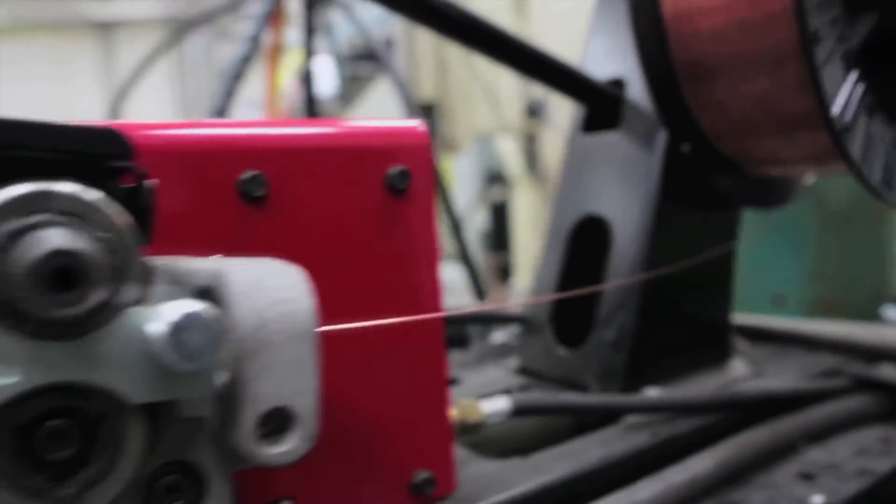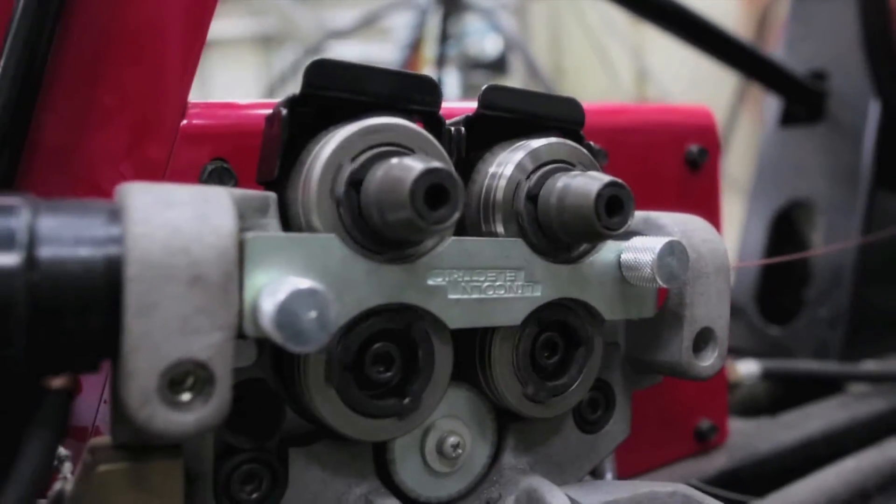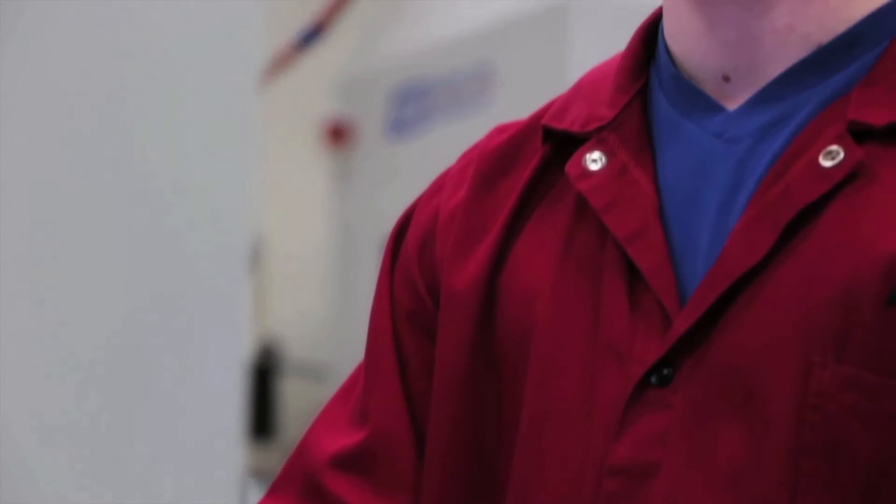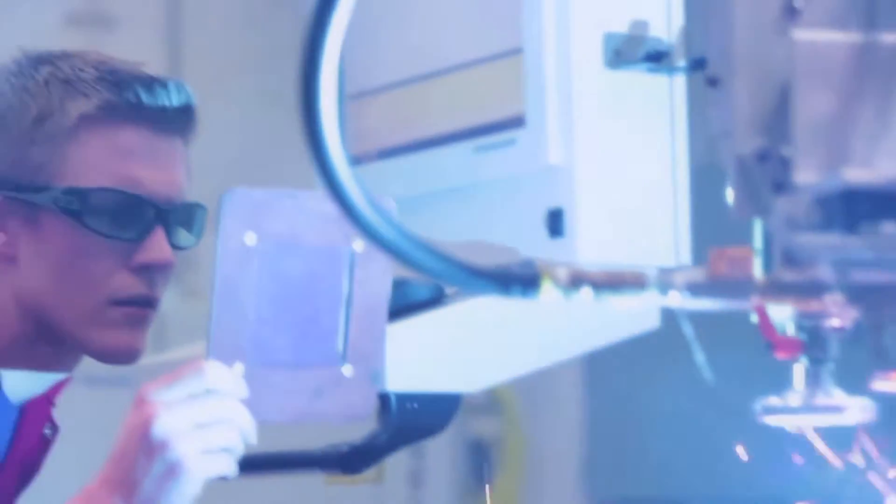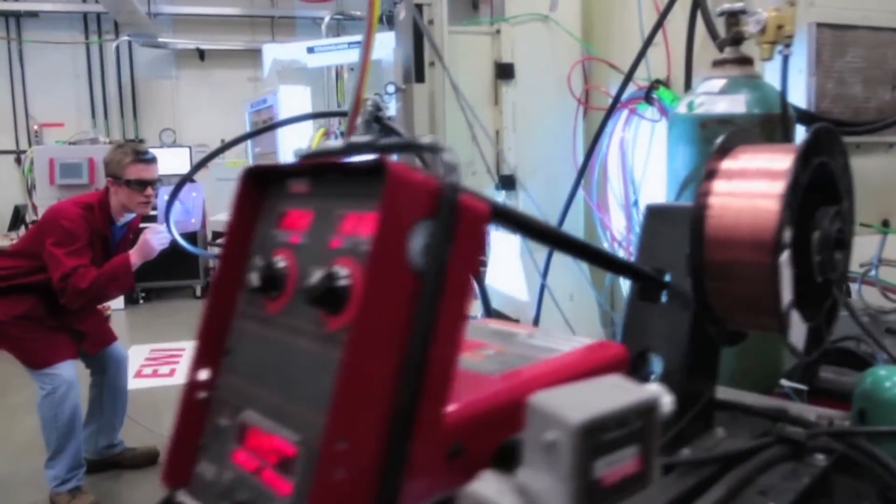As you can see here, a standard gas metal arc welding power supply is used and the spooled wire electrode provides filler metal, improving gap tolerance and allowing the introduction of alloy elements into the weld pool. Our specialized high power laser optics